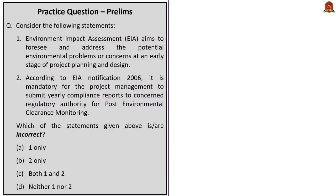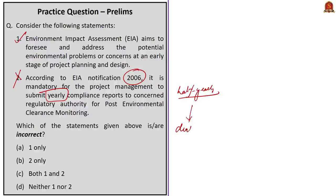Question four: consider the following statements. Statement one says EIA aims to foresee and address potential environmental problems at an early stage of project planning and design — this is correct. Statement two says according to EIA notification of 2006, it is mandatory for project management to submit yearly compliance reports to the regulatory authority for post-environmental clearance monitoring — this is incorrect, since the 2006 notification mandates half-yearly compliance reports, and this was amended to yearly reports only in the draft EIA of 2020. Since we are supposed to identify incorrect statements, the correct answer is option B: two only.